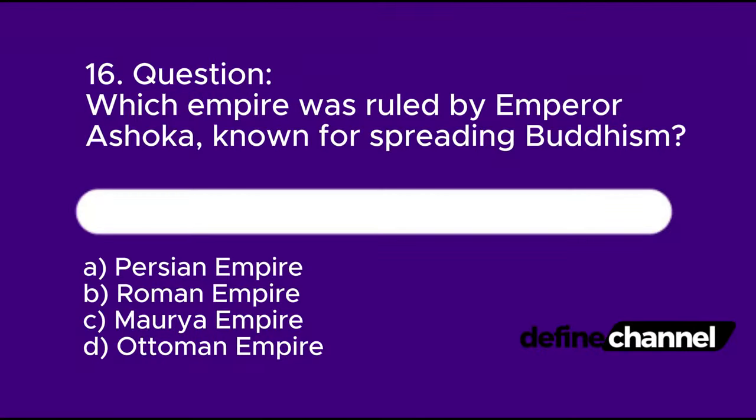Question 16: Which empire was ruled by Emperor Ashoka, known for spreading Buddhism? A. Persian Empire, B. Roman Empire, C. Maurya Empire, D. Ottoman Empire. Please determine which is the correct answer.